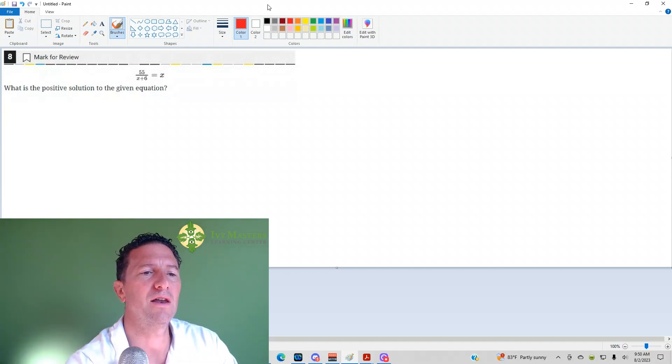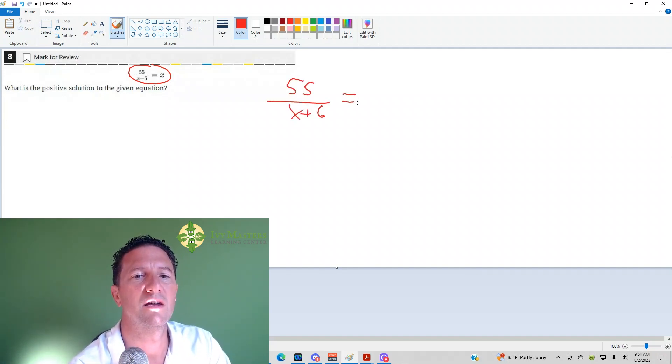What we've got, and you can see it here, is 55 over x plus 6 equals x. So you may start doing this and say, oh, I know how to do this. I've got to multiply both sides by x plus 6. I'm just going to get rid of it on the left, I've got to distribute it on the right.